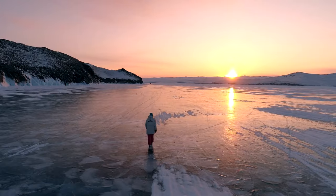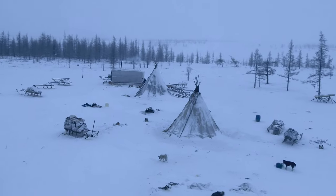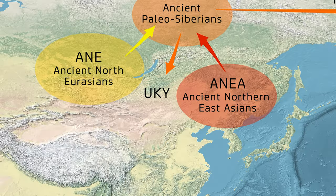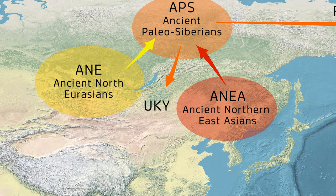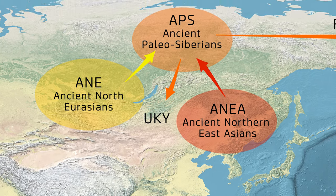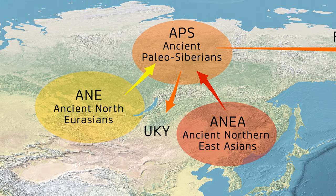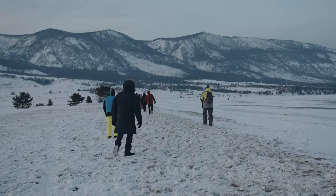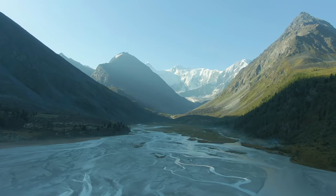The story starts in Eurasia during the last ice age. The two ancestral populations of Native Americans are Ancient Northern East Asians and Ancient North Eurasians, with a mixture of these populations creating a group known as the Ancient Paleo-Siberians. There was lots of mixing between these groups in Siberia around 25,000 years ago, yet these people soon split into two main groups.